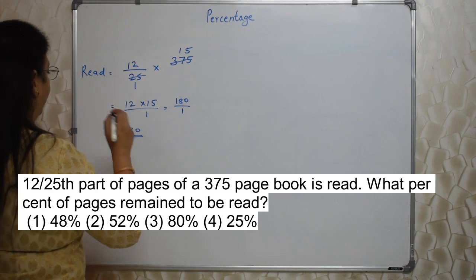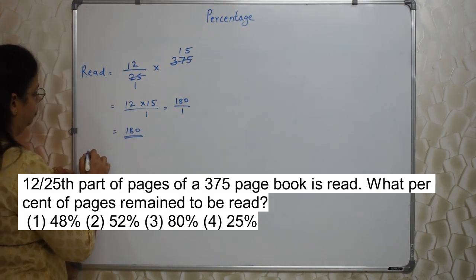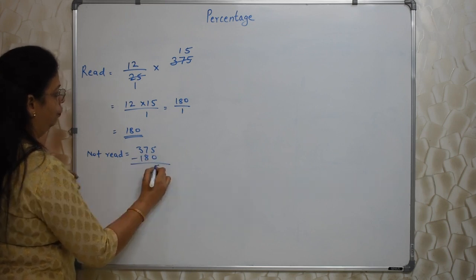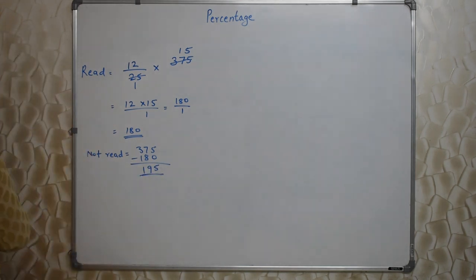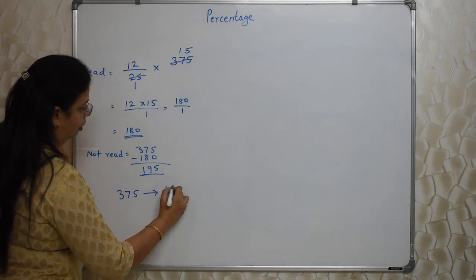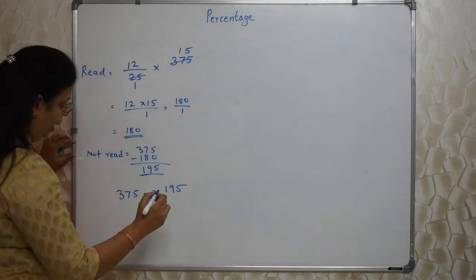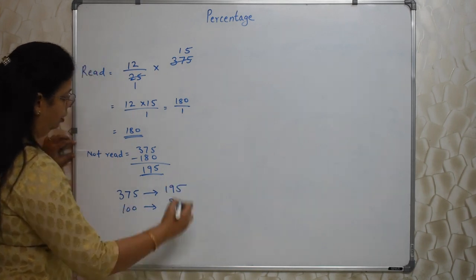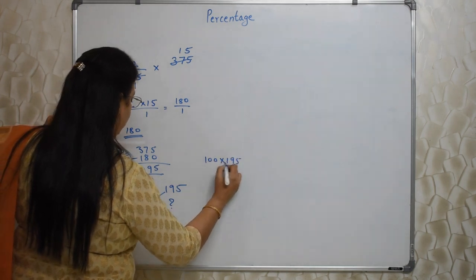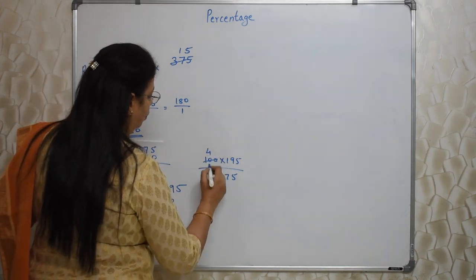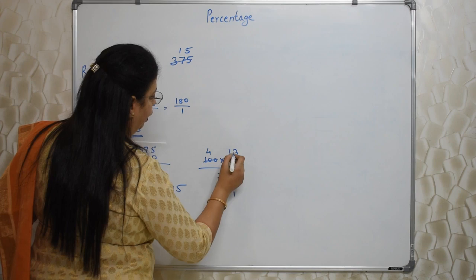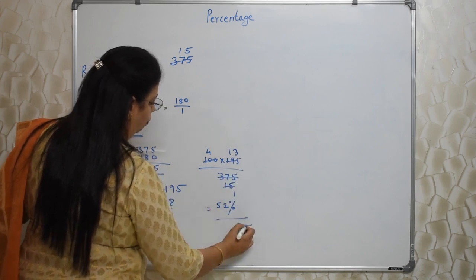Percentage of not read portion. So not read portion will be how much? 375 minus 180. So 5, 9, 1, 195 pages are not yet read. So iska percentage find out kerthah hai. So jabhi 375 pages are there total, us main se 195 pada nahi hai. To agar 100, percentage puchha hai na, 100 hai toh kitna nahi pada hai. So we need to do cross multiplication. 100 into 195 upon 375. 25 se karthay hai. 25 fours are, 25 fifteens are. Fifteens ones are, fifteens ones are, and then fifteens threes are. 4 into 13, fifty two. So 52 percent is the correct answer.